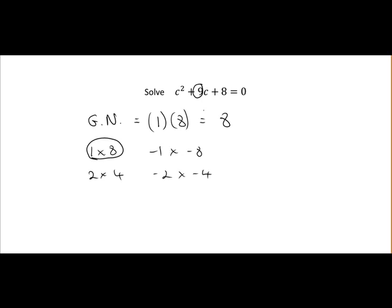What we do next is we break up the 9c. So with c squared instead of 9c we use what we found in the previous step. We will put in plus 1c plus 8c.